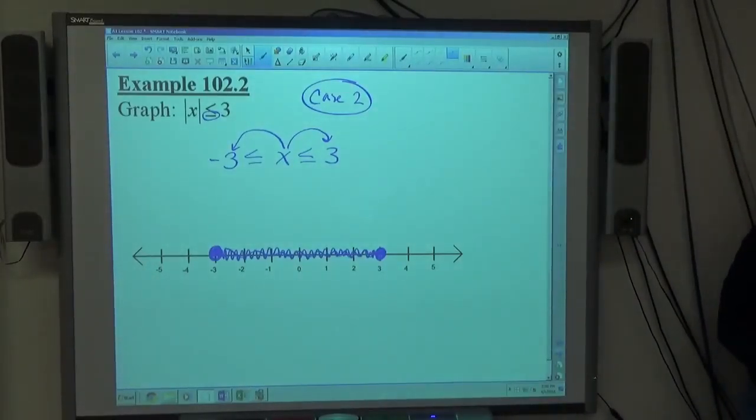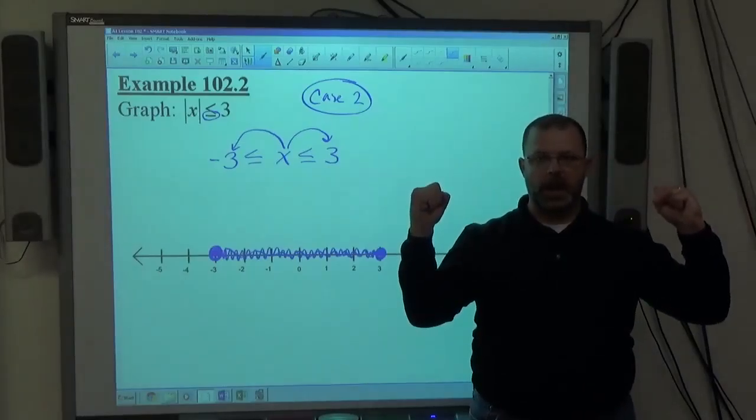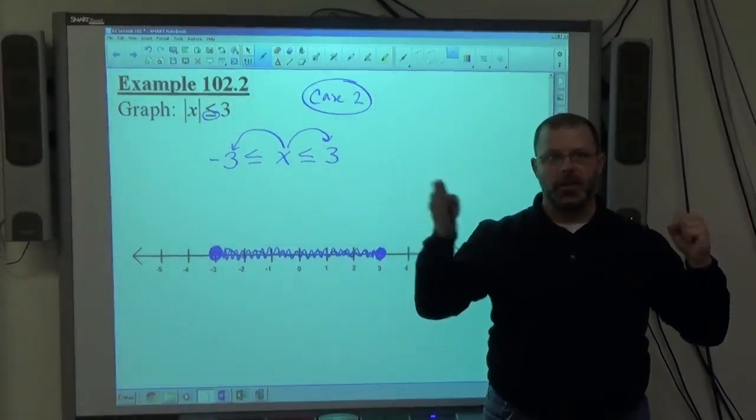That's how a case 2 inequality is always graphed for an absolute value inequality. It's always going to be dot, dot, open or closed, and then you're going to shade in between.